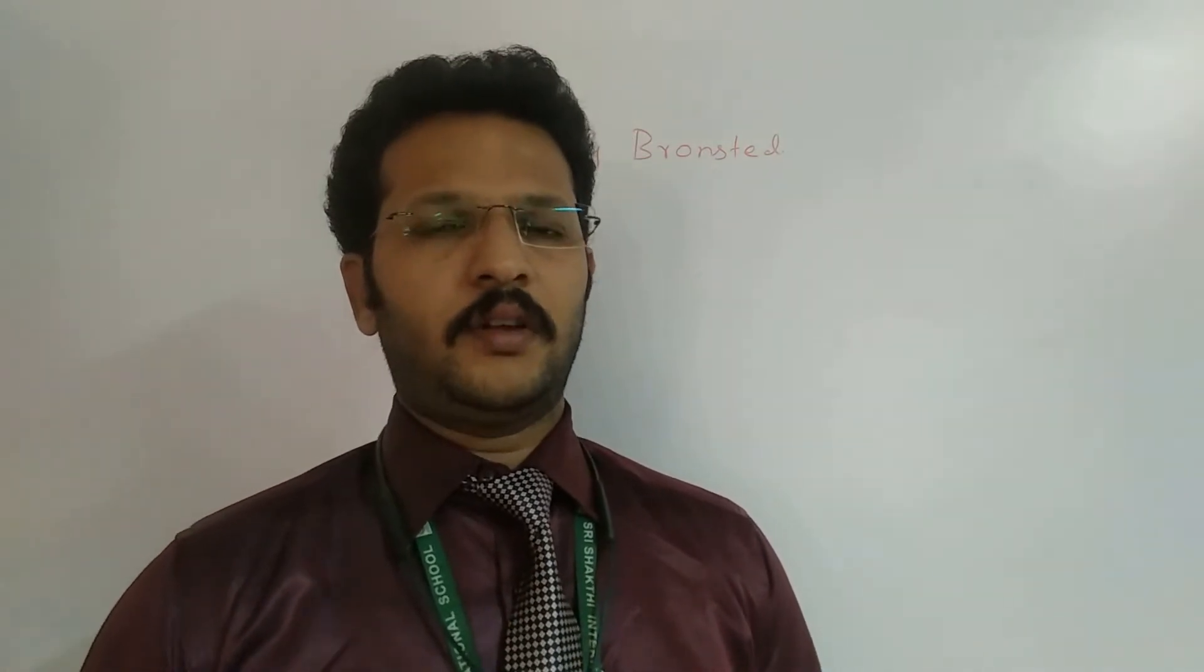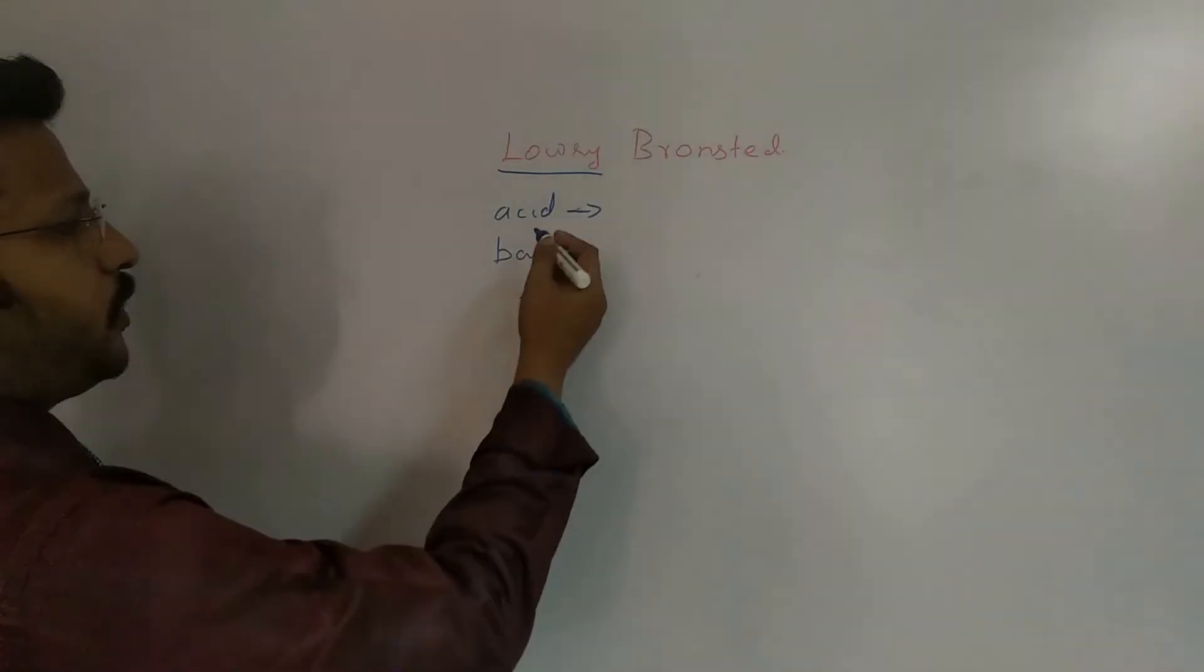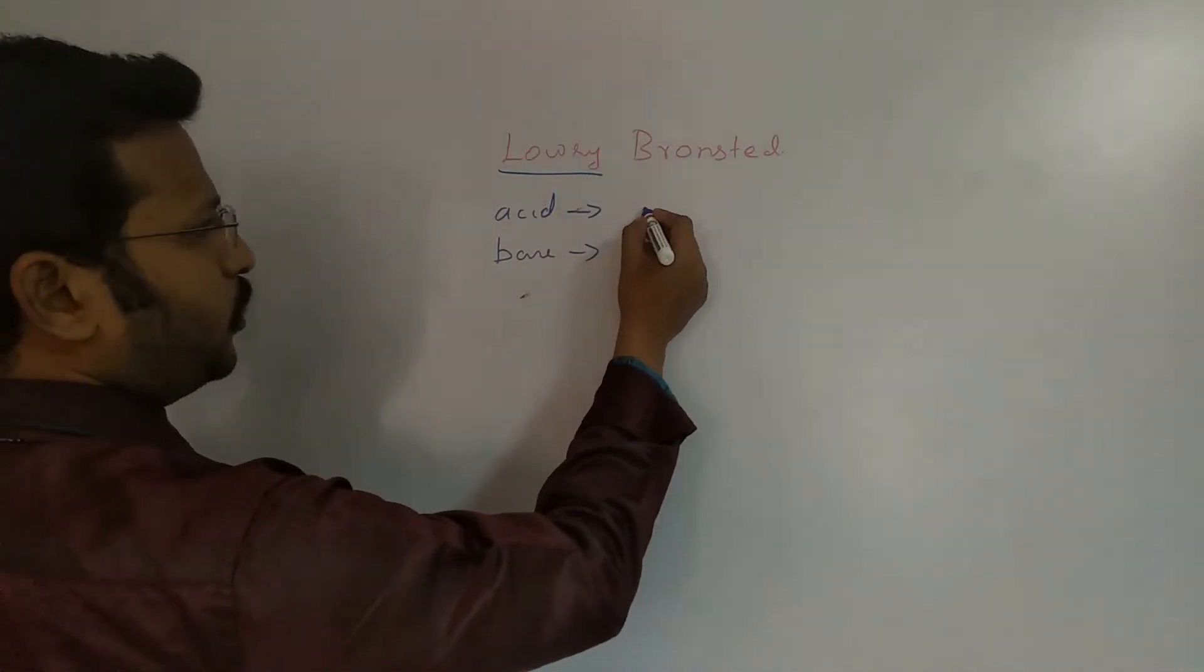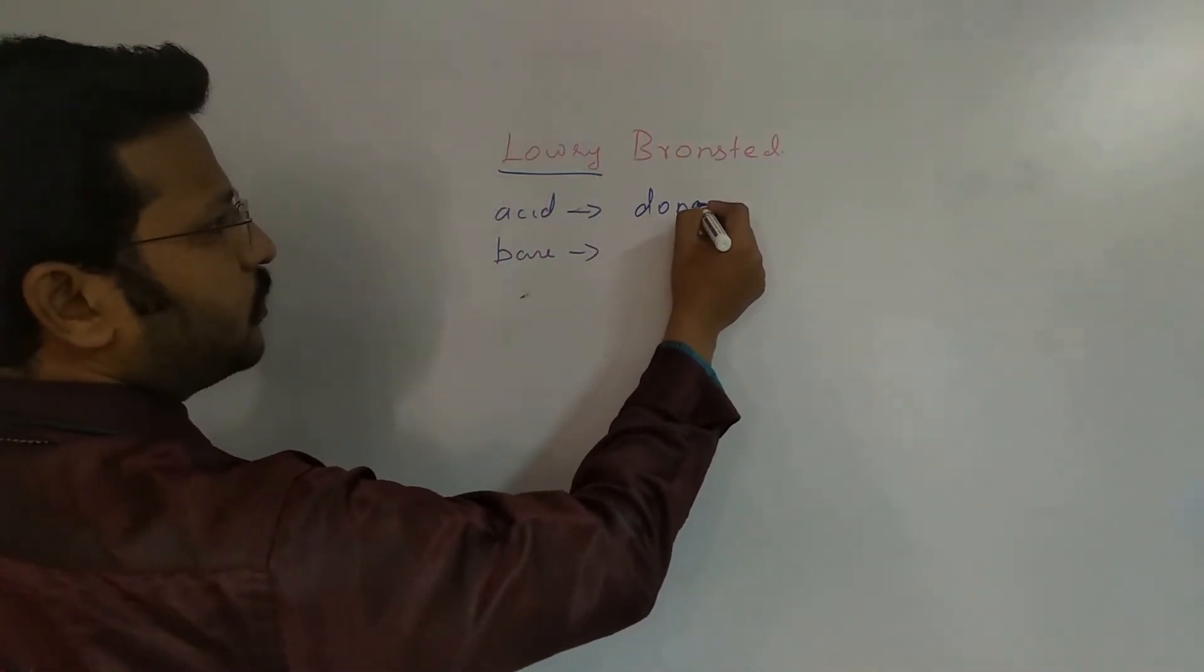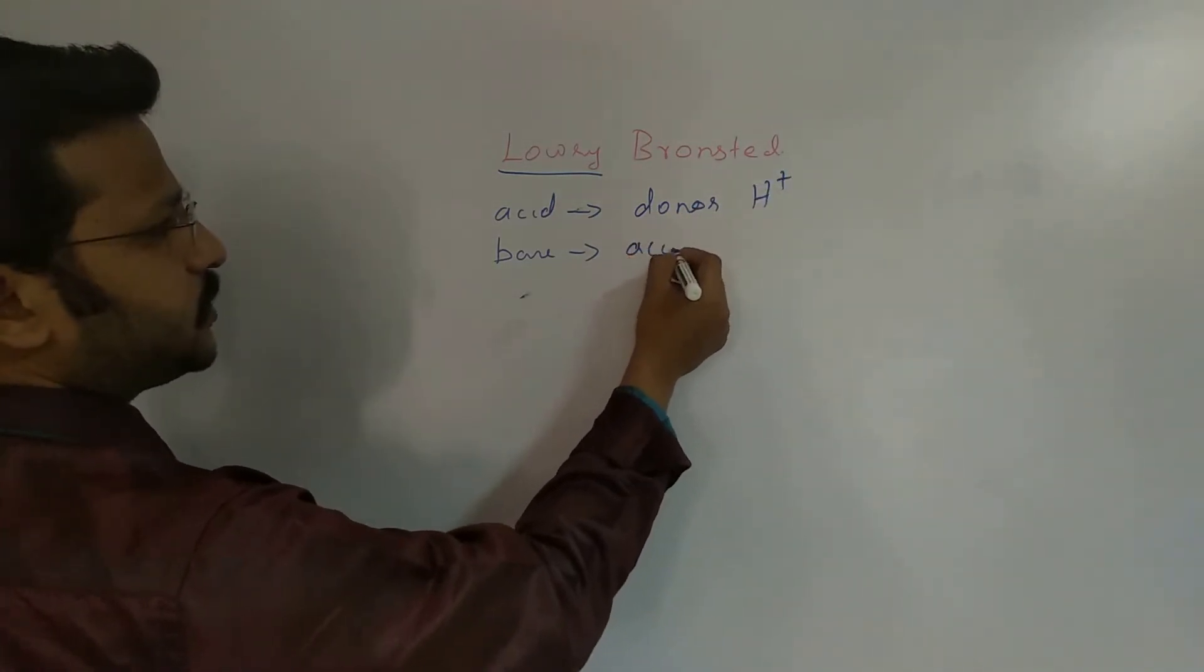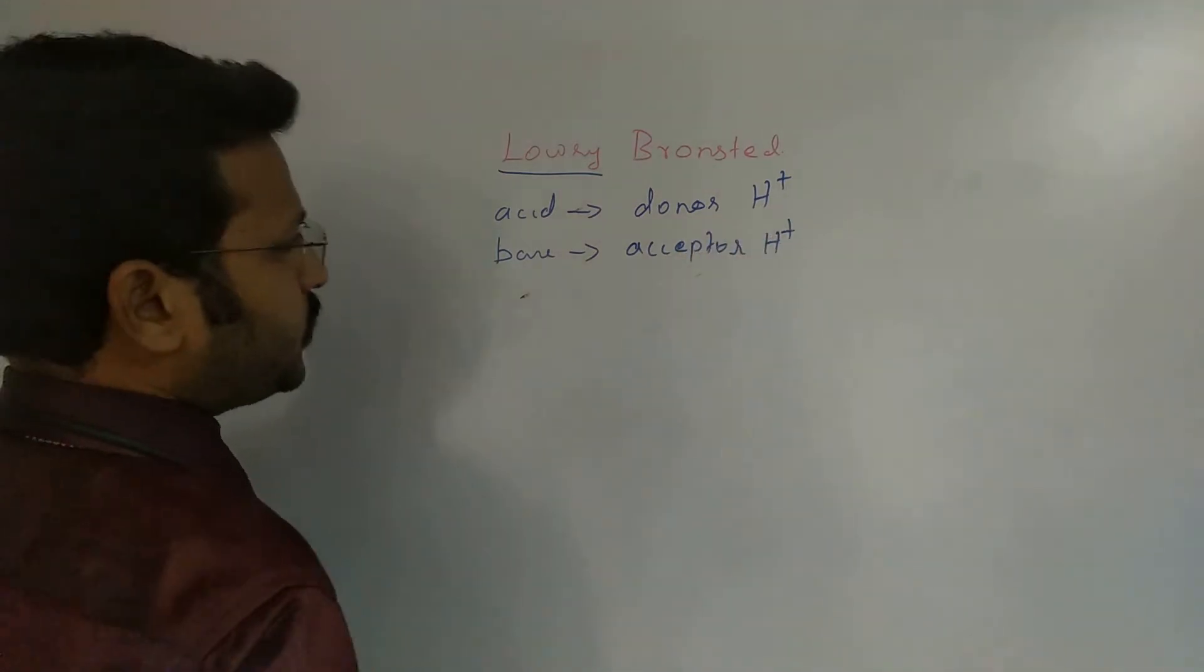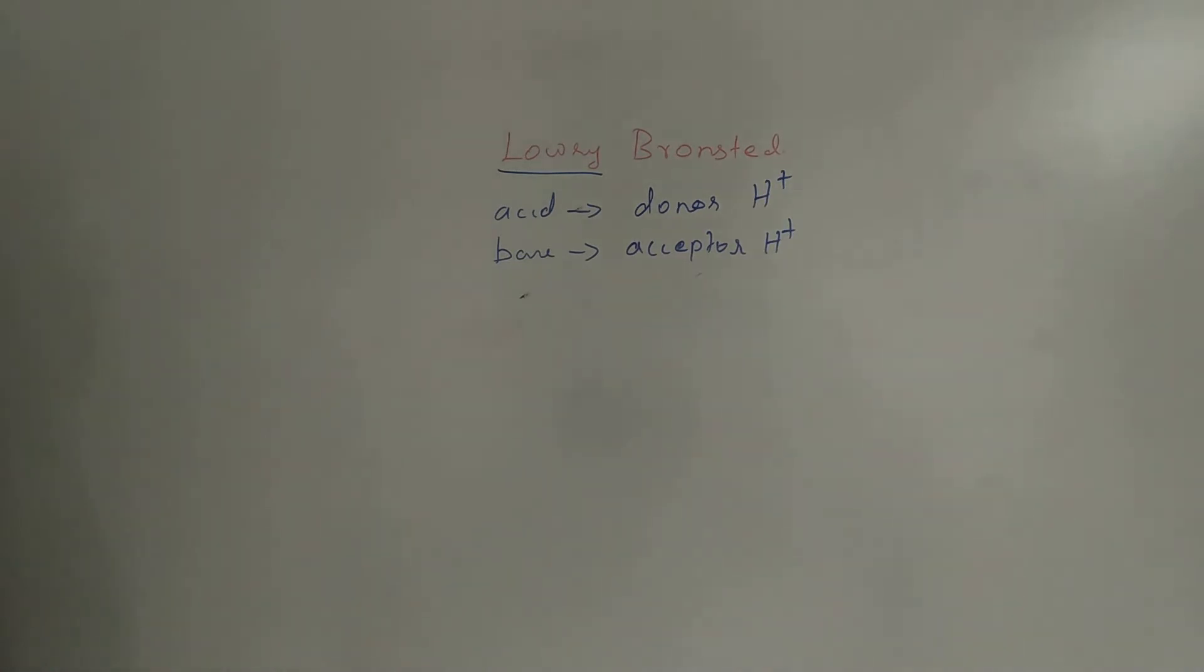Now, we will see about the next type, that is Lowry-Brønsted Acid and Basis. Lowry-Acid that will donate, the donor of H plus, and this is acceptor of H plus. Brønsted concept is the same, acids are H plus donors and bases are H plus acceptor.